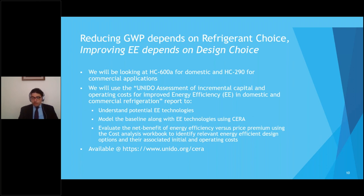Reducing global warming potential depends on the refrigerant choice. Moving from R134A to isobutane (HC-600A) gives an almost 1000-fold reduction in global warming potential. However, improving energy efficiency depends greatly on design choices. In our study, we looked at isobutane or hydrocarbon 600A for domestic appliances and propane or hydrocarbon 290 for commercial applications. We modeled the baseline along with energy efficiency technology options using CERA, then evaluated the net benefit of energy efficiency versus price premium using cost analysis workbooks. These models are available at unido.org/cera.